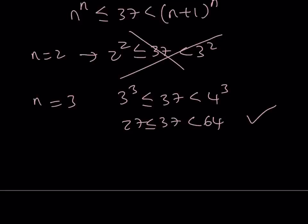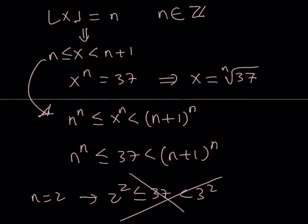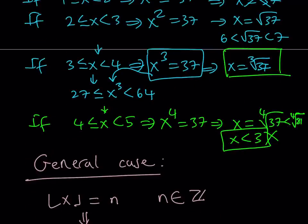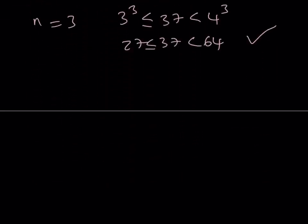Which means that the cube root of 37 is going to be, so our equation was, let me rewrite my equation, x to the power floor of x equals 37 has one solution. And, that is equal to the cube root of 37.